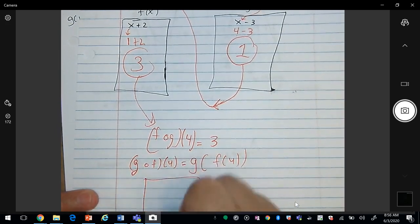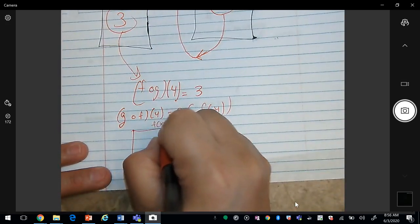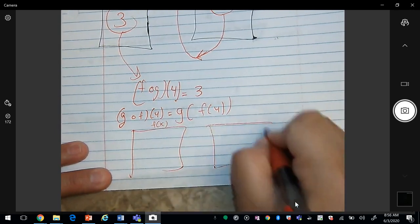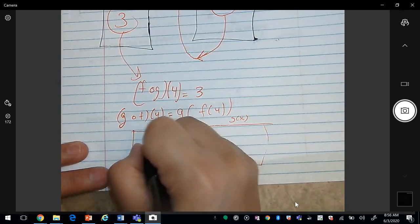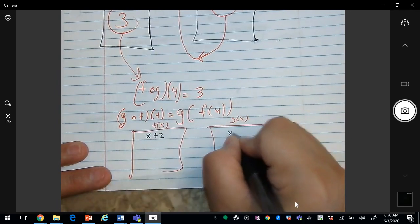Then if you still have your two machines, this is f of x, and this is g of x. So f of x, we have x plus 2, and g of x, we have x minus 3.